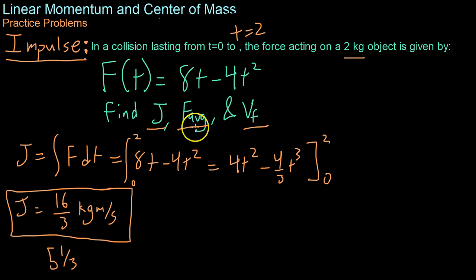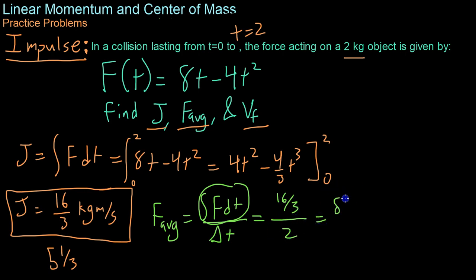From here, we want to know the average force. And we know that the average of anything is the sum of that with respect to time, so sum of force dt over that change. Well, this is just the impulse, and we already know the impulse. So we plug in 16 thirds over 2 seconds, and we get that the average force is 8 thirds newtons or 2 and 2 thirds newtons.